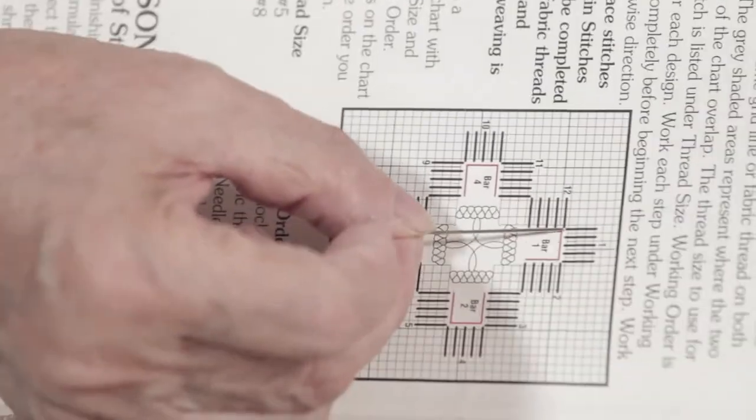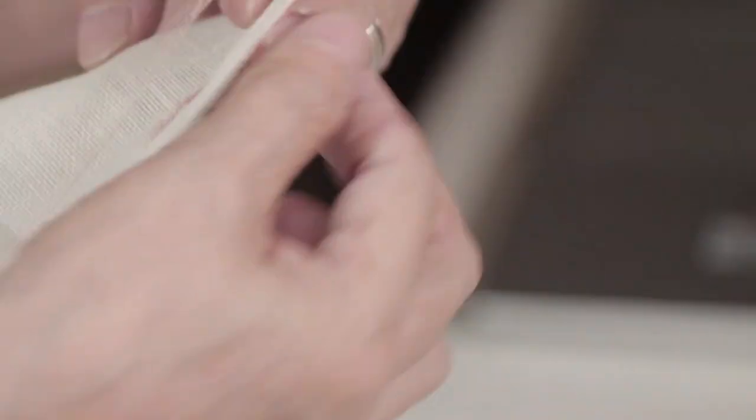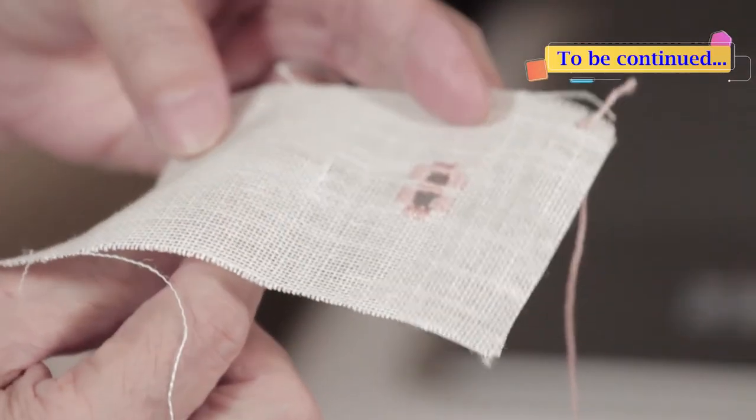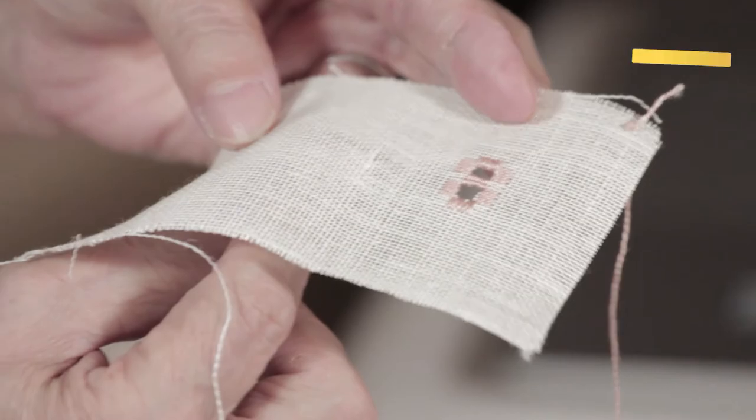So let's start with the first cluster block. Again, we need the three inches away waste knot. So we can maybe put our waste knot here, and then this should be about three inches already.